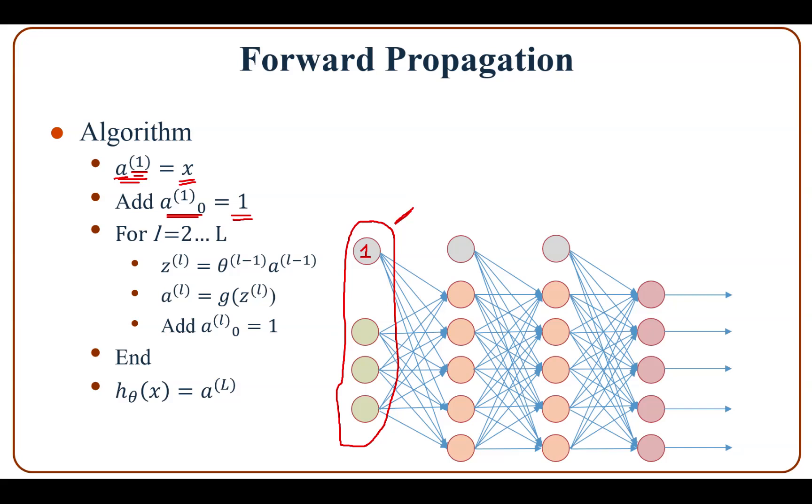In layer 1, we look for L from 2 to capital L, and capital L is the number of layers. In this specific example, L is equal to 4. In each iteration, we compute the weighted sum Z_L.